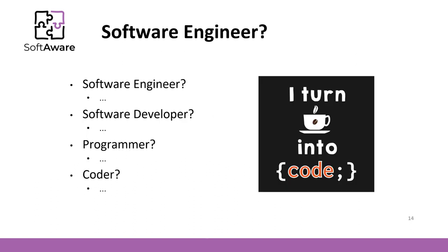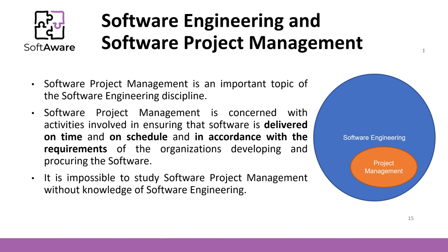When talking about the professionals who create software, many terms are used interchangeably. Is there a difference? It depends on your views. In general, it is regarded that a software engineer has the widest understanding — it is a professional who applies the principles of software engineering to all software development activities. In the beginning, I spoke about project failures. One specific topic directly related to the success of a project is project management. It is concerned with activities involved in ensuring that software is delivered on time and on schedule and in accordance with the requirements of the organizations developing and procuring the software. In this course, we will present a broader view regarding project management because software project managers must have a deep understanding of software engineering.